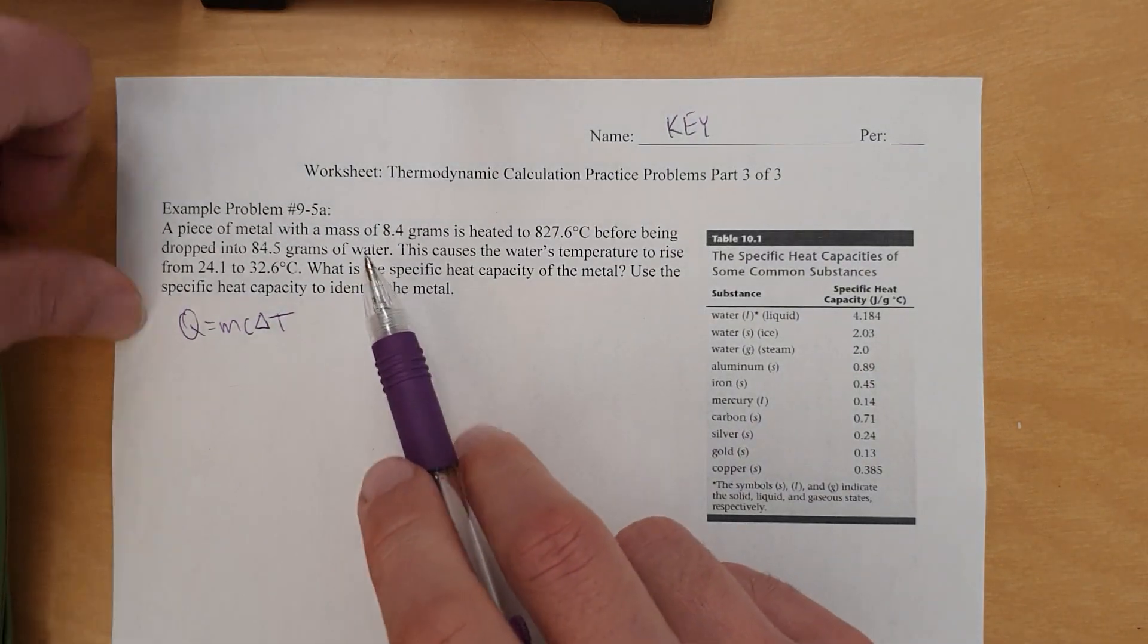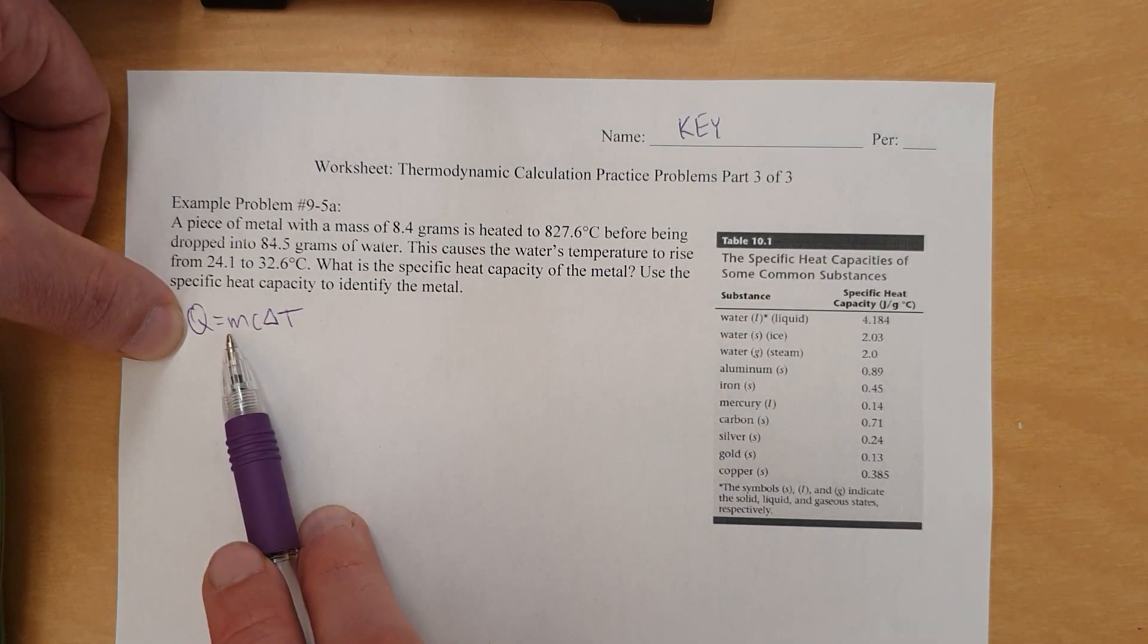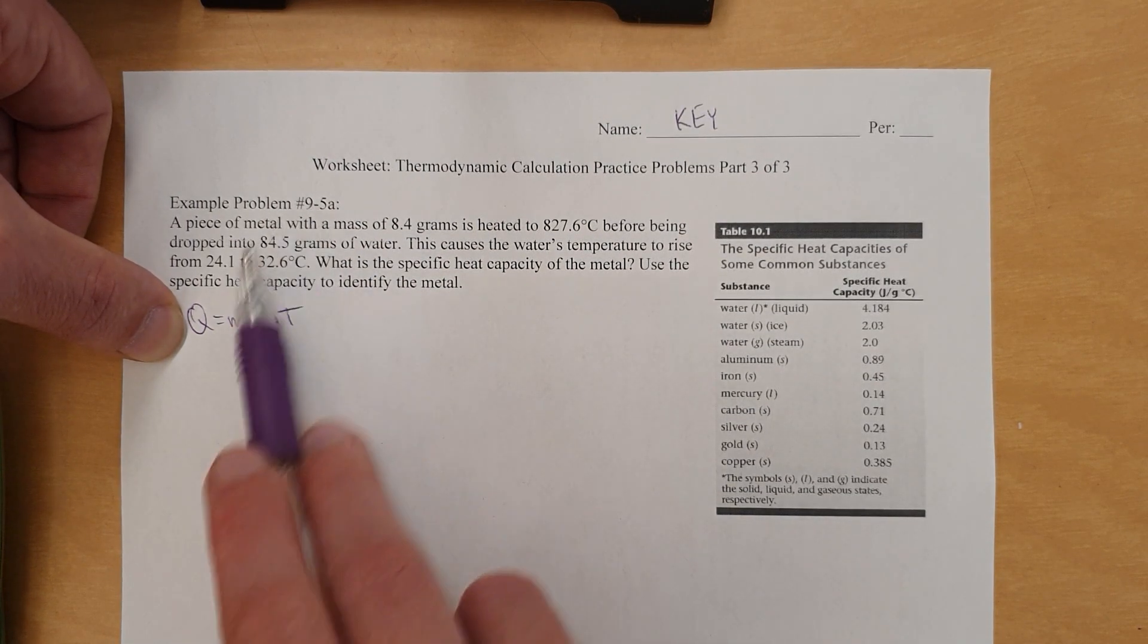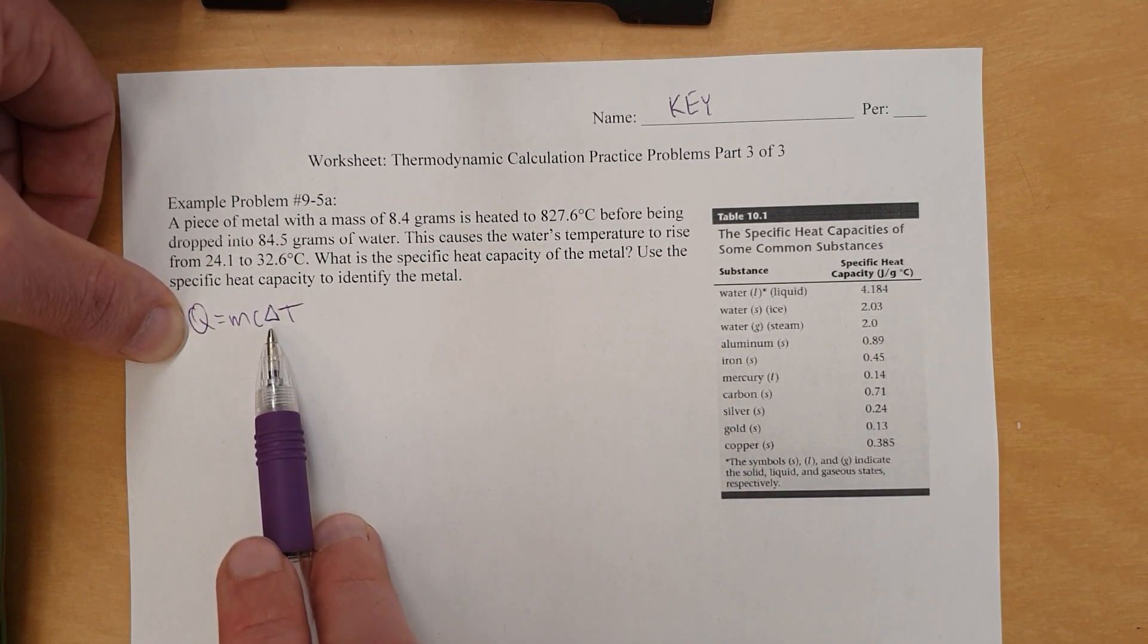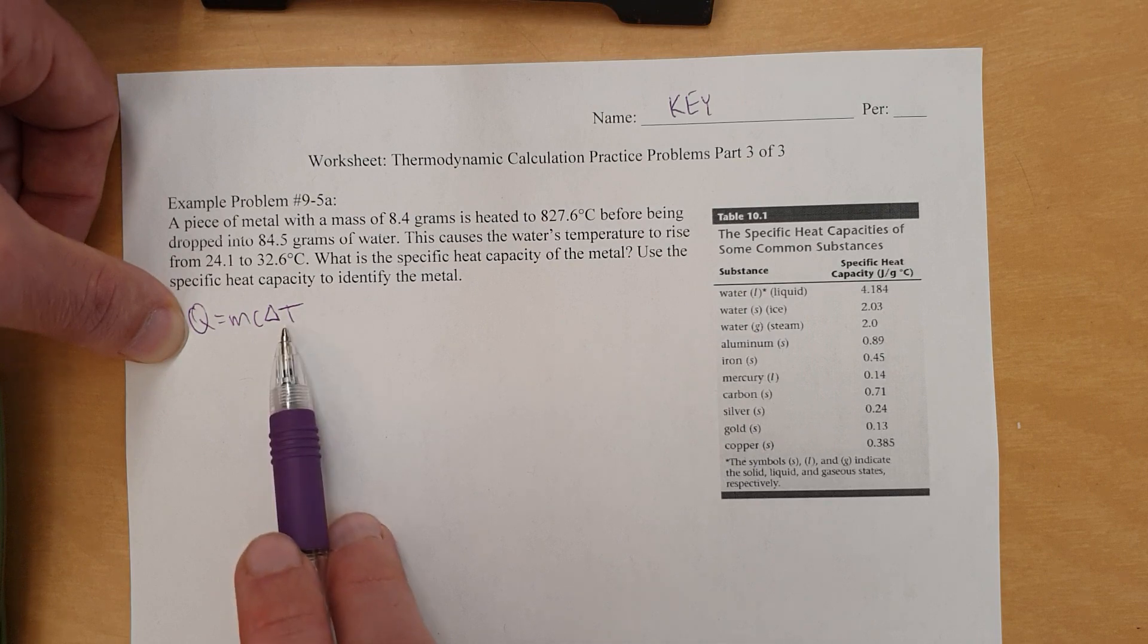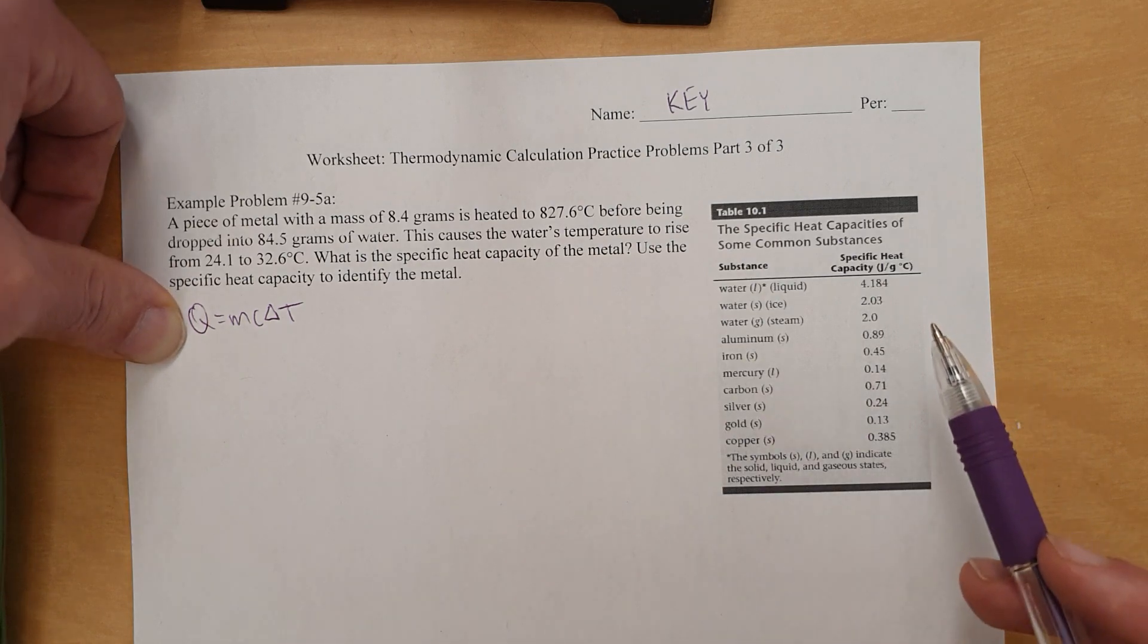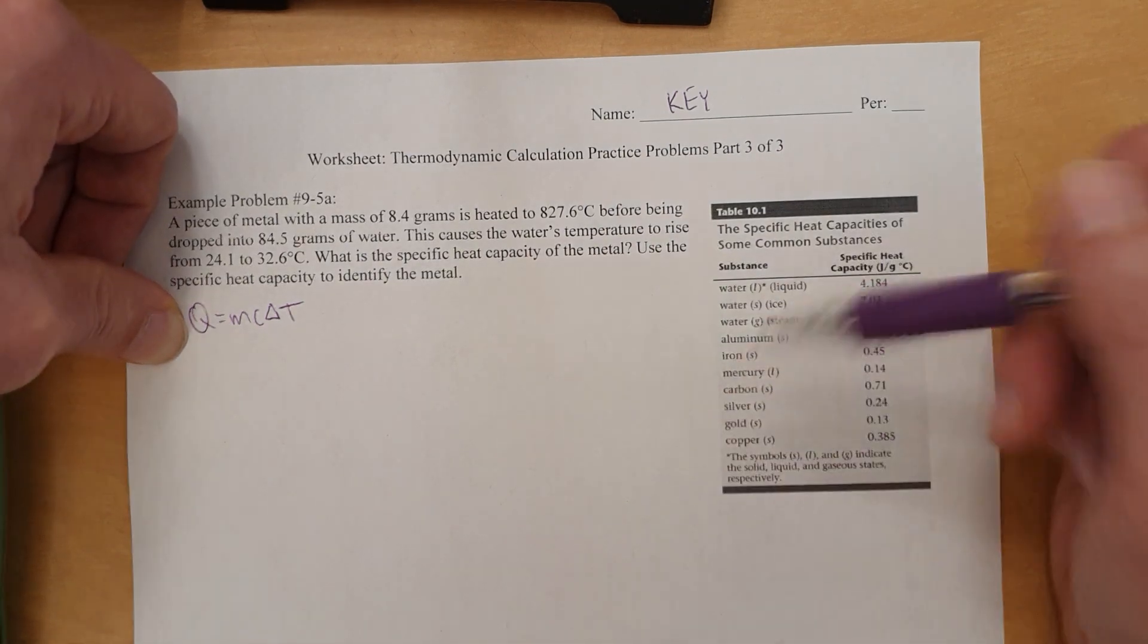Now, Q for the metal, Q is not actually given anywhere in the question, so we need to find Q. M is given right there for the metal. C for the metal, we don't know that because we don't know what metal it is, so we don't know which one to pick off the chart. Delta T, we do know that one, and I'll talk about that in a moment. But we're going to have an issue. We're going to need to find both C and Q for this one. So how are we going to do that?